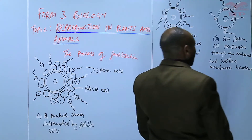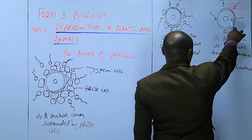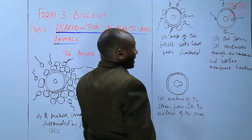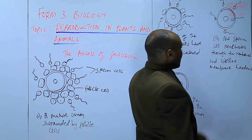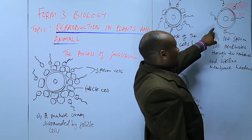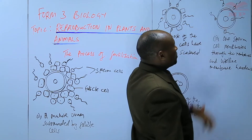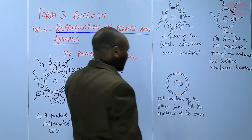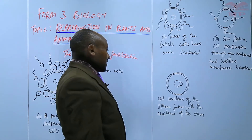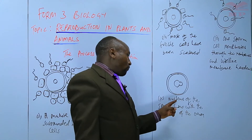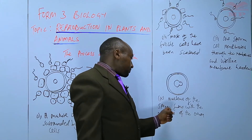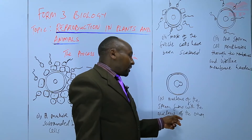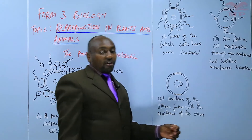After that, only one sperm cell penetrates through the membranes. The vitelline membrane hardens — the outer membrane hardens to prevent other sperm cells from penetrating. And then finally, the nucleus of the sperm fuses with the nucleus of the ovum.